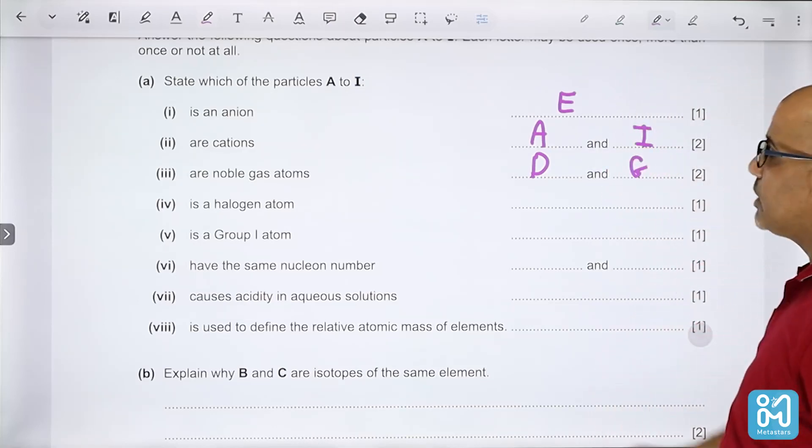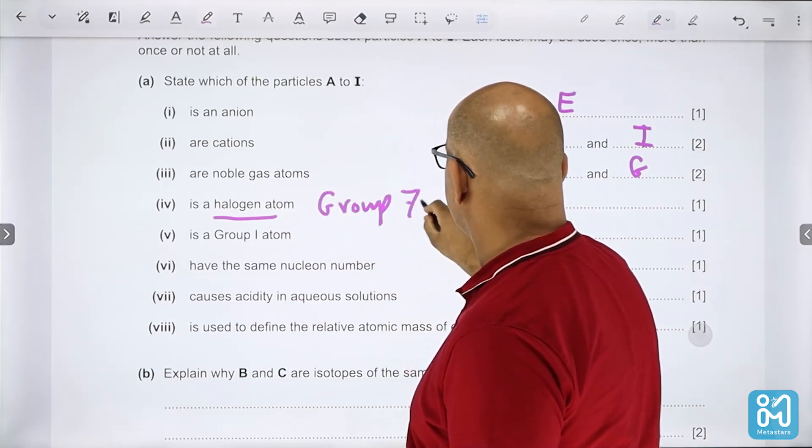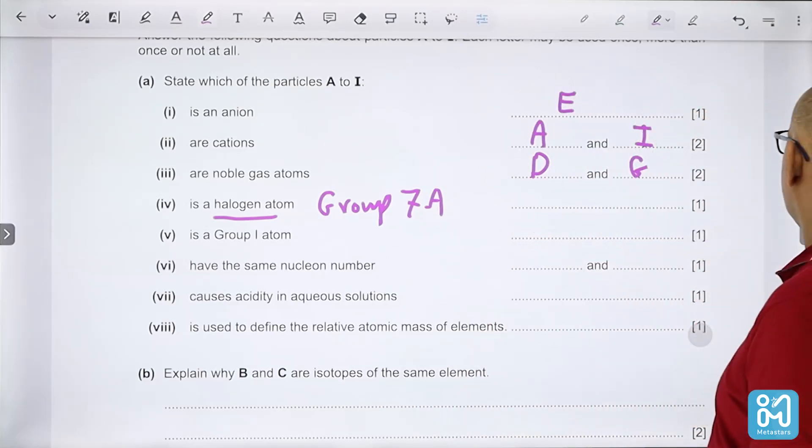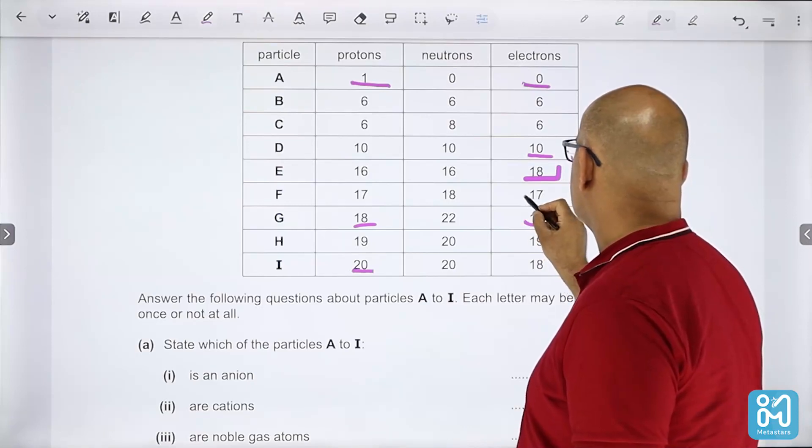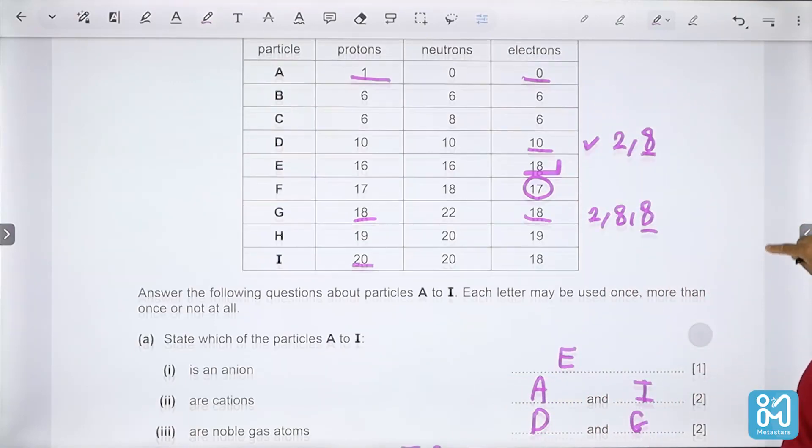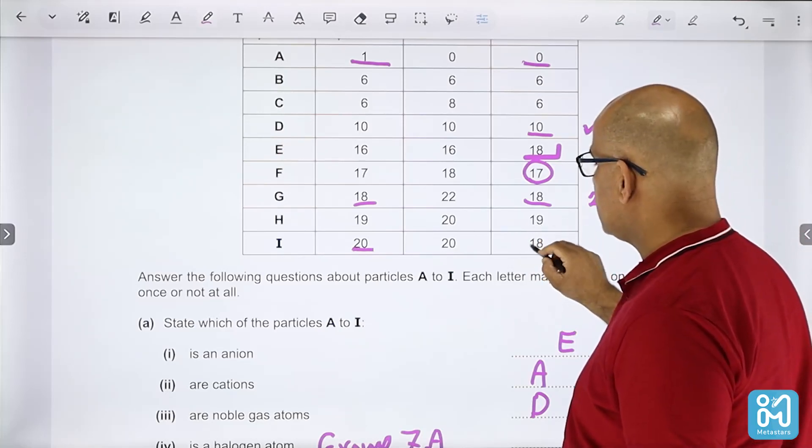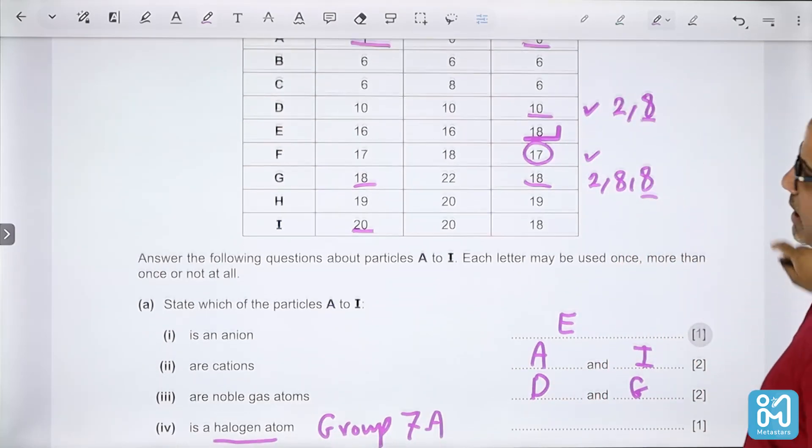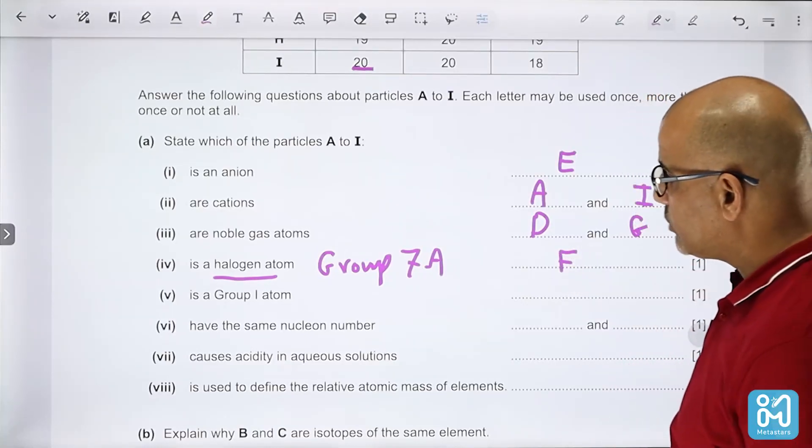It's a halogen atom. The halogen means that we are in group 7A or group 17. So which one of these elements is from group 17? F which is 2-8-7 is from the halogens. So F is the element which is from the halogens.